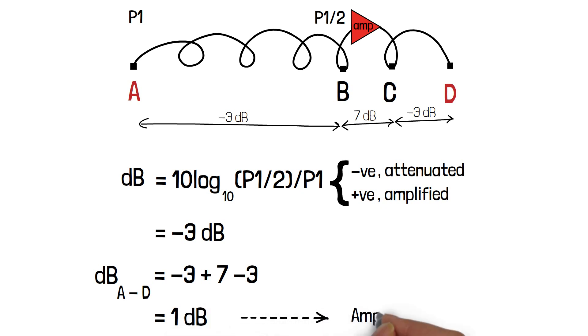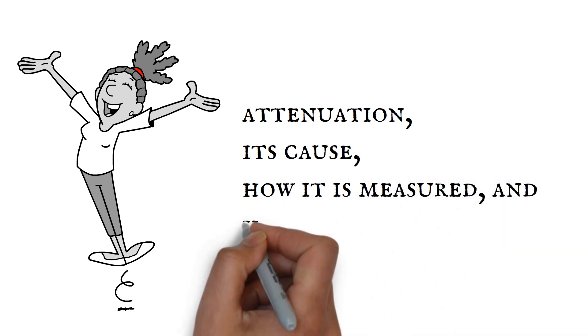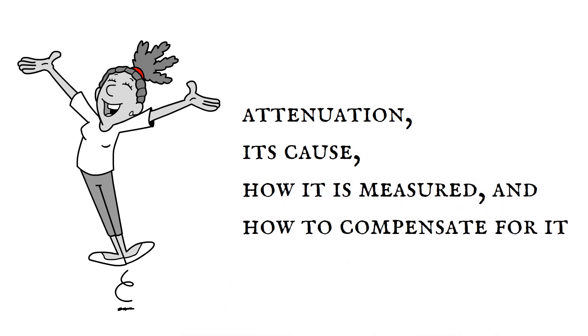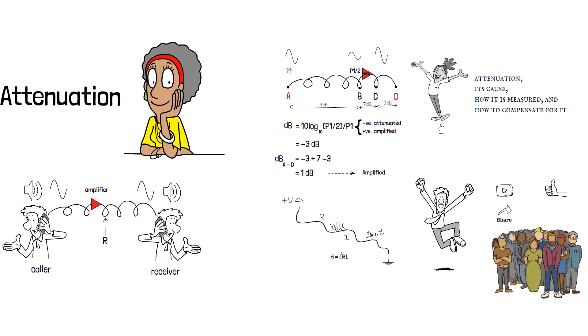It means the signal has gained power as it moves from point A to point D. In this video, we discussed attenuation, its cause, how it is measured and how to compensate for it. If you have learnt something in this video, then please like this video, share this video so that more people can learn. Subscribe to techterms if you want to learn more and turn the notification icon on. Thanks for watching.